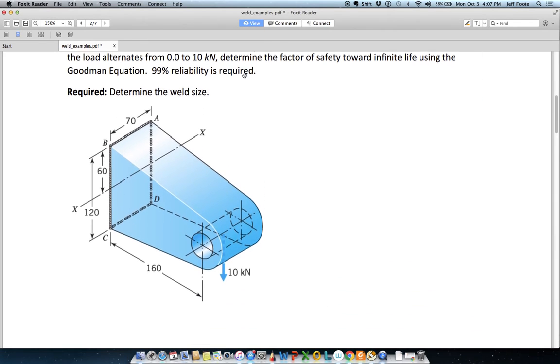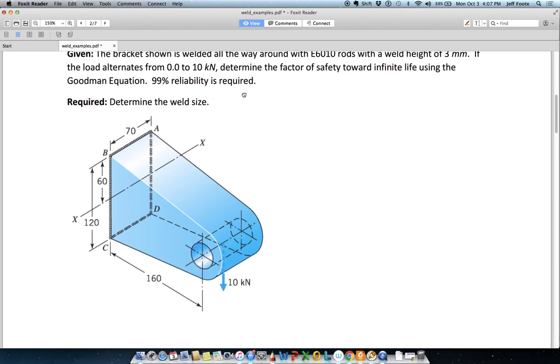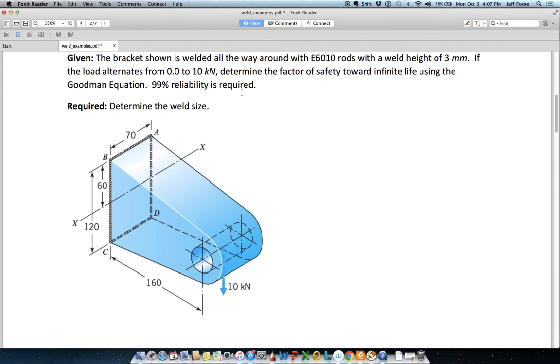And if you recall, that is going to produce a force that goes from 0 to a maximum and produces a set of stresses that go from 0 to a maximum. So this is a repeated loading case. And in a repeated loading case, the alternating stress is equal to the mean stress, which is equal to half of the maximum stress. So we'll calculate the maximum stresses based on the 10 kilonewtons, divide by 2 for the alternating and mean.